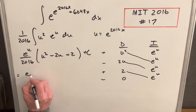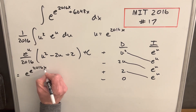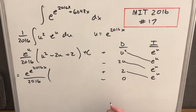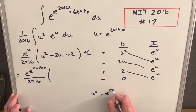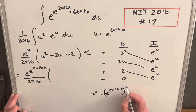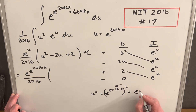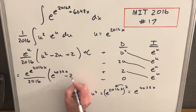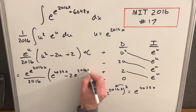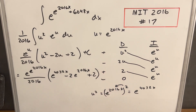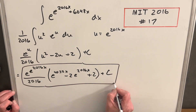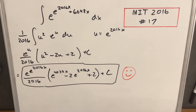Outside the parentheses we're going to have e to the e to the 2016x, using our substitution u equals e to the 2016x. Then u-squared is going to be e to the 2016x squared, which multiplying in the exponent gives e to the 4032x. Then minus 2u is minus 2e to the 2016x, and then just plus 2, plus C — and we're done. That was MIT Integration Bee 2016, Problem 17. Thanks for watching, please like and subscribe. Have a good day.